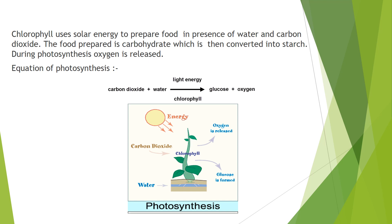We can see the photosynthesis reaction here: carbon dioxide combines with water in presence of light energy and chlorophyll present in the leaves, making glucose — a carbohydrate which is later converted into starch — and oxygen is released in this process. Water is absorbed by the roots, carbon dioxide is taken through the stomata, solar energy is absorbed by the chlorophyll, glucose is formed, and oxygen is released.